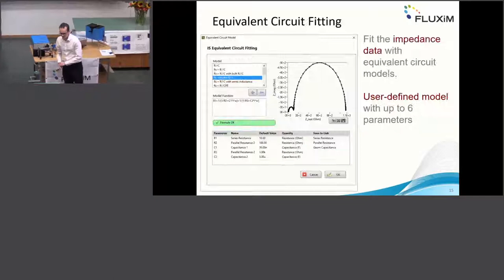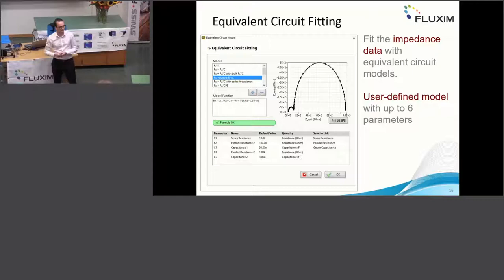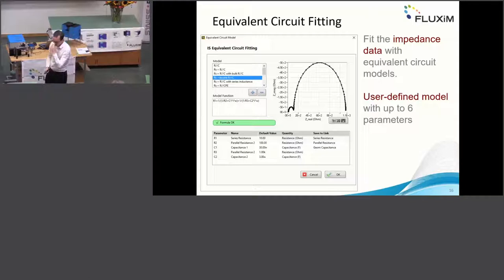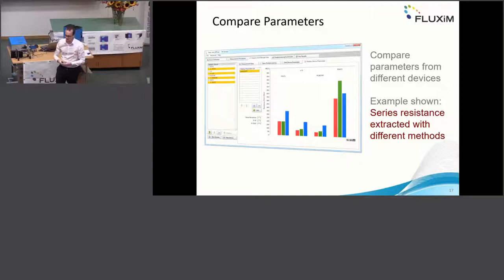For equivalent circuit fitting, we have some easy circuits you can choose from, but you can also put in your own formulas and use our fitting algorithm to fit these equivalent circuits to your measurement. Once you have extracted different parameters — for example, the charge carrier mobility from different materials — you can easily create bar plots to compare your results.